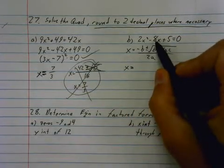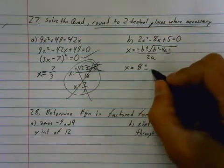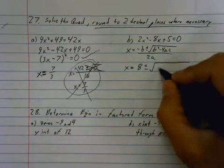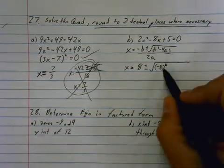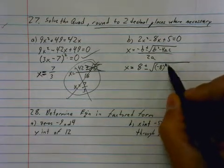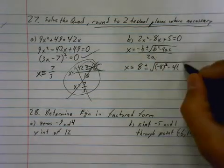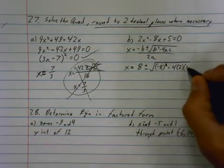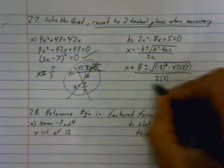So, negative 8 is your b value. It goes into negative b and becomes positive 8. Watch that sign. Negative 8 is going to go into there and get squared. Now, when you punch it in your calculator, make sure it goes to 64, not negative 64. Depends on how you punch this in your calculator. Negative 4 times a, which is 2, times c, which is 5, all over 2 times a, which is 2.